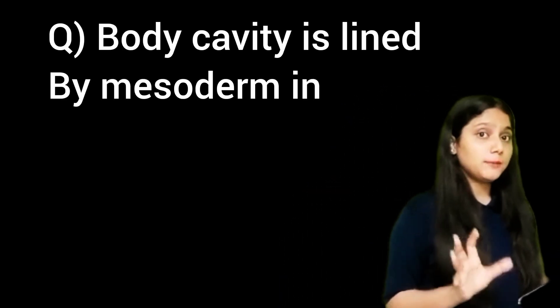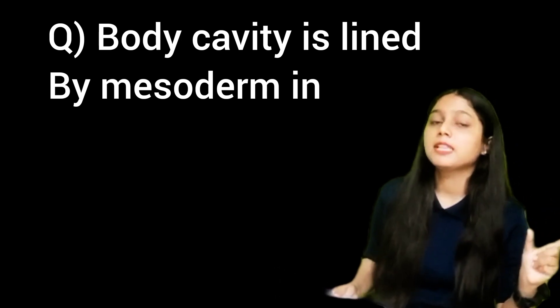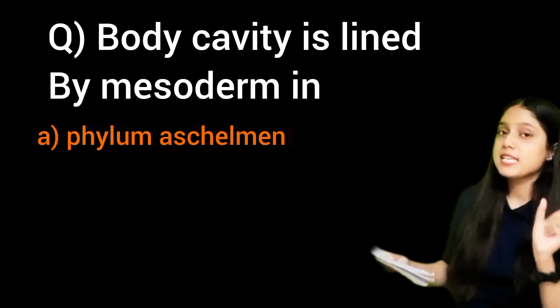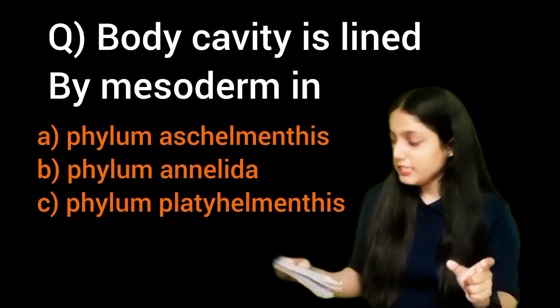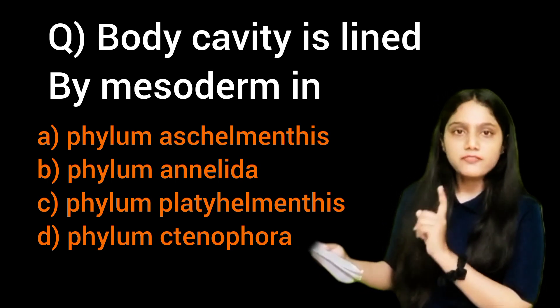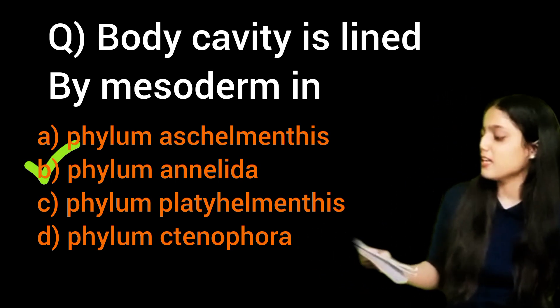Now, as usual, we will discuss a few questions on the topic we discussed. The first question is: 'Body cavity is lined by mesoderm' — we are talking about true coelom. The options are: first, Aschelminthes; second, phylum Annelida; third, Platyhelminthes; and fourth, Ctenophora. The right answer is phylum Annelida.